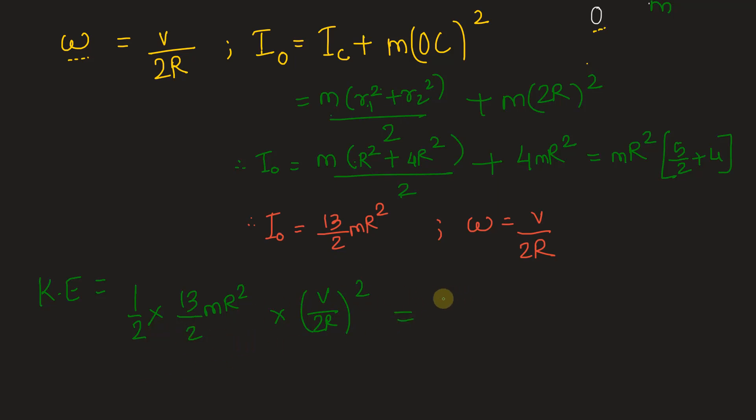So, we have this as 13 divided by 2 into 2, 4 into 2 square 4, so that is 4 into 4, 16. 13 by 16 into mR square by R square gives us 1. We are left with v square.